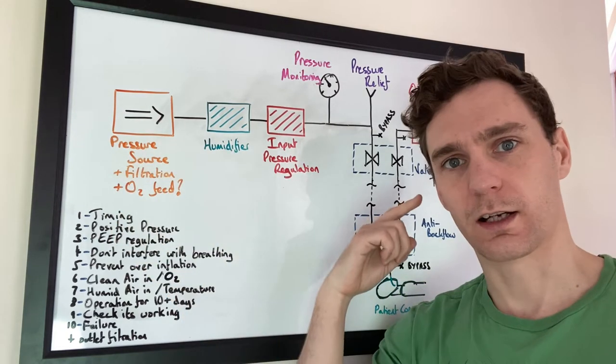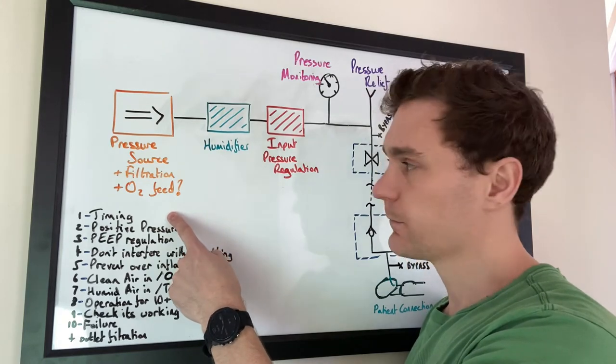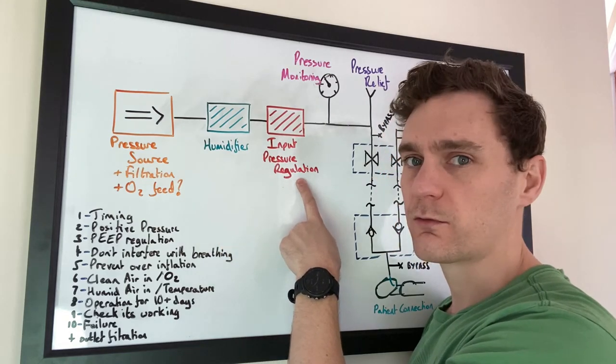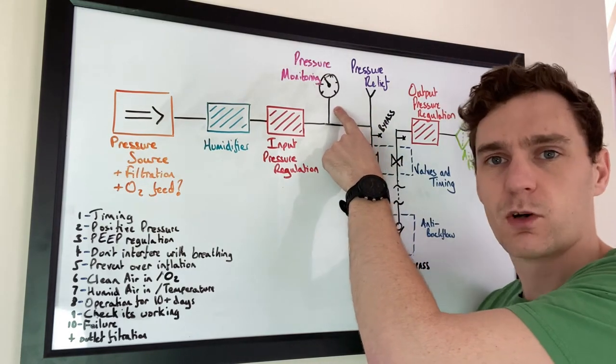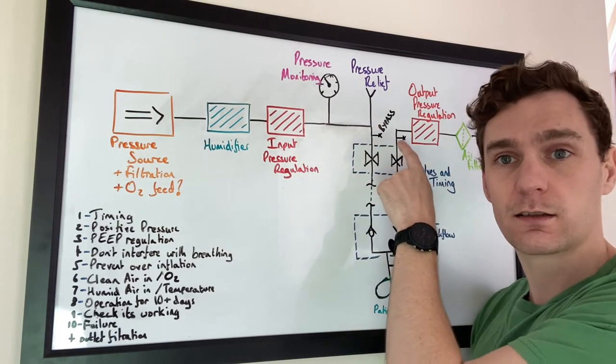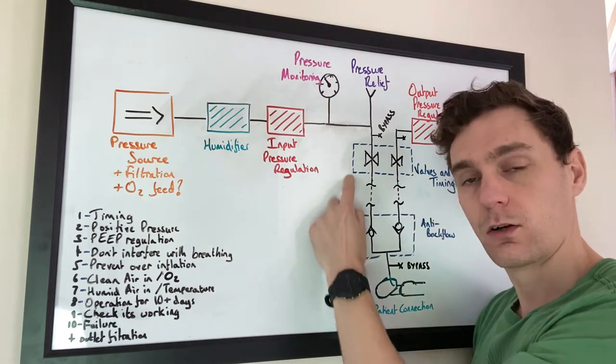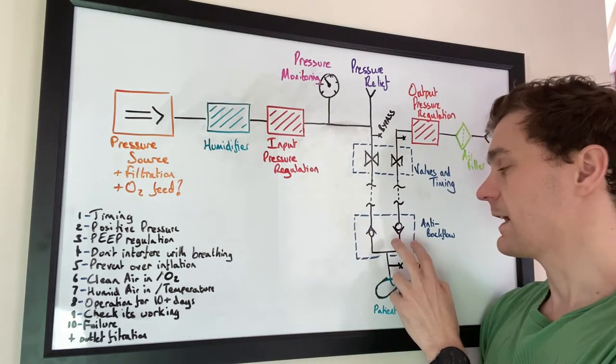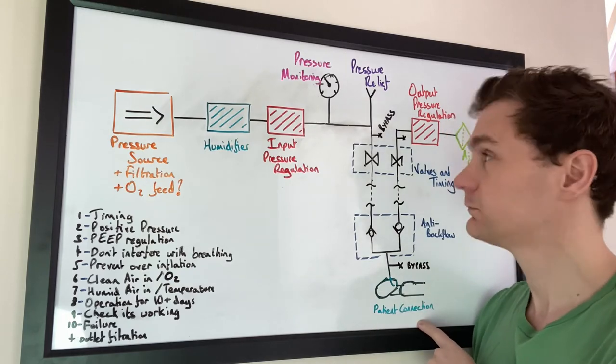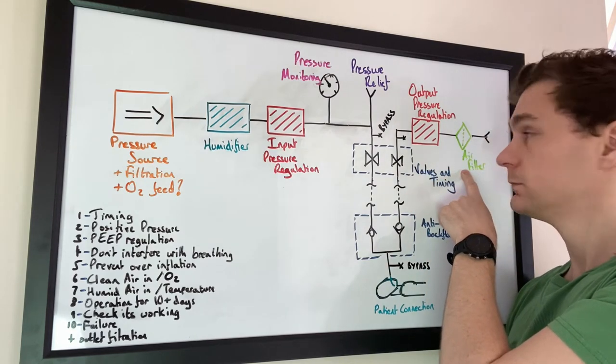So let's just start with a rundown of the whole architecture of the system. First off we have a pressure source here. There's also some filtration and possibly an oxygen feed. Next we have a humidifier. Next we have input pressure regulation. Here we have pressure monitoring. Pressure relief. We have bypass here so this is where you could connect another tube. We have the valves and timing. Here we have a long tubing run. Here we have the anti-backflow region. We have another bypass. A patient connection. Up here we have output pressure regulation. An output air filter. And then the exhaust.